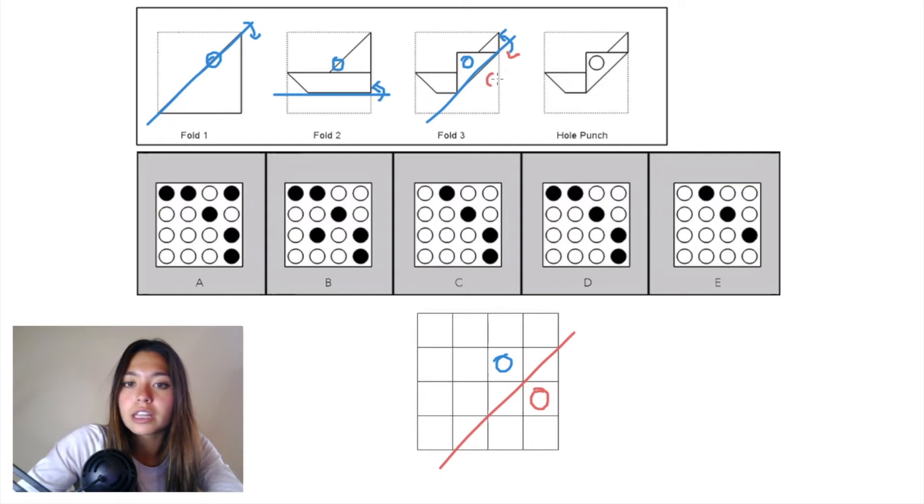We can see that pink hole punch ends up on paper on fold 2 and fold 1, so we know it exists in our grid.